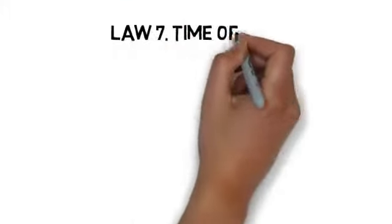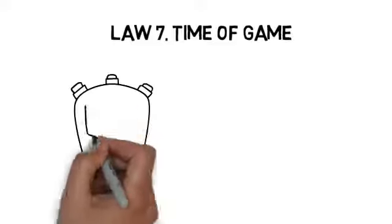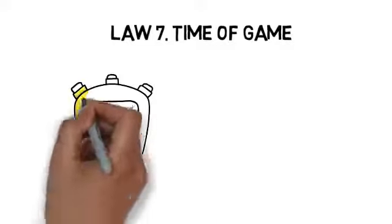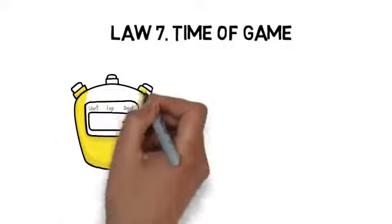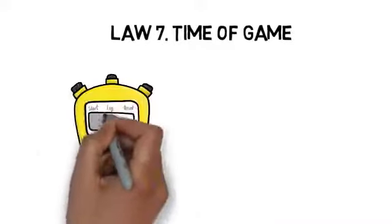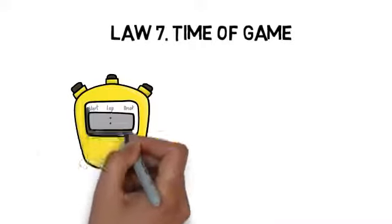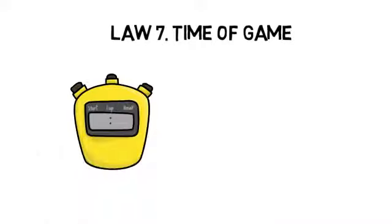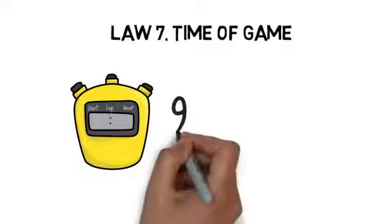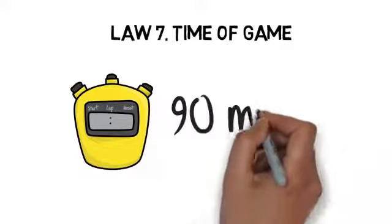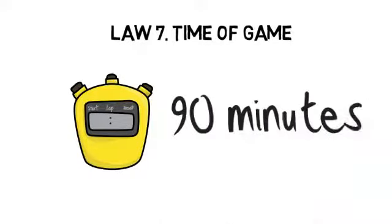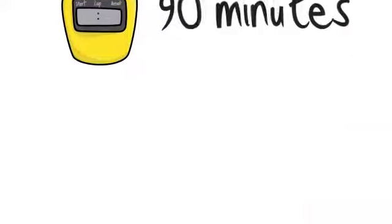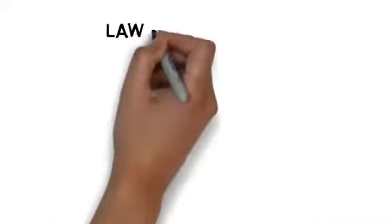Law 7: time of game. Official 11v11 soccer is 2 halves of 45 minutes with a 15-minute halftime. Kids' time duration varies according to league — typically 2 halves of equal time with 1 halftime break. In official games, the referee controls time and may add extra time for injuries, substitutions, or anything else that causes the game to pause.